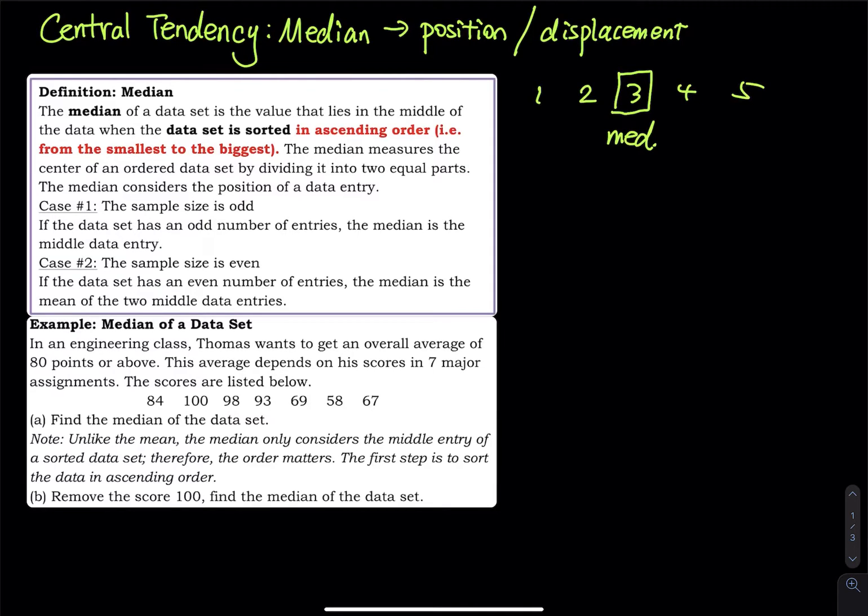So what if you add one more number to it? 1, 2, 3, 4, 5, 6. So now we have 6 numbers. 6 is an even number. So since the sample size is even, the median is the average of the two middle entries.